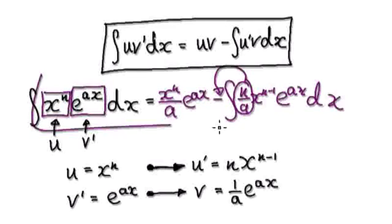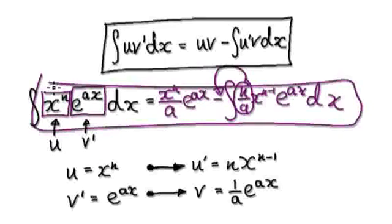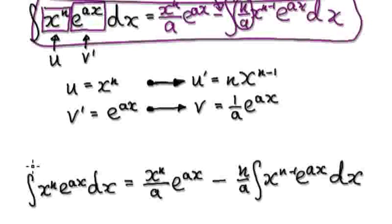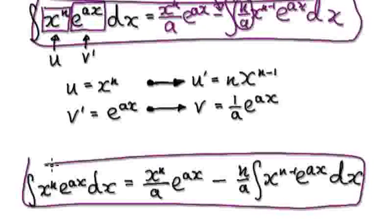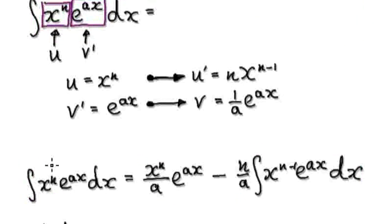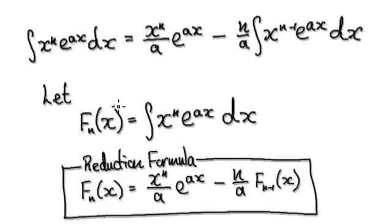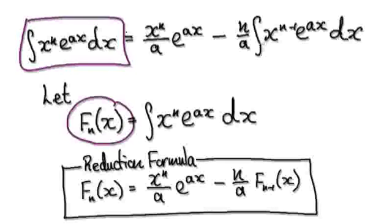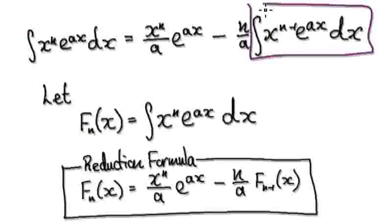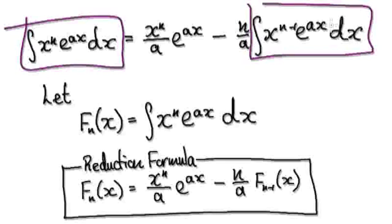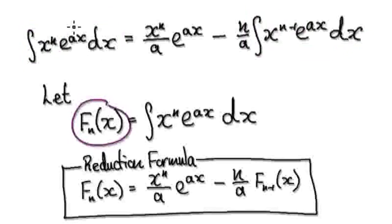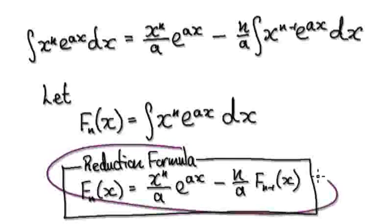You can see that N/A is a constant, so take it out. Then this whole thing will become the simplified expression. Now let F(N) be the integral of x^N · e^(Ax) dx. Notice that the remaining integral is pretty much exactly the same, but just one notch down — it's F(N-1). So if you let that equal F(N-1), then your reduction formula will be this.